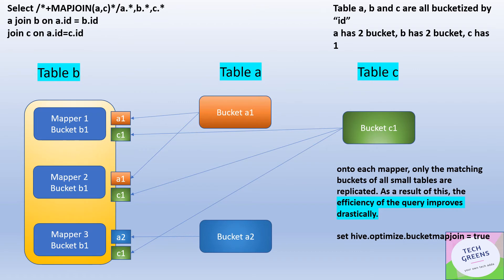Let's try to understand how it works. If you see in terms of query syntax, the hints can be given in a similar way how we do in the Map Joins. In this particular example, we are joining three tables A, B, and C on the ID column. That means for this Bucket Join to happen, all the tables A, B, and C should be bucketized by ID.